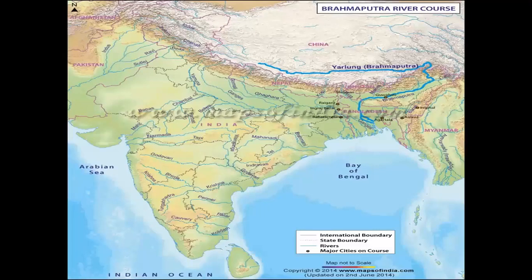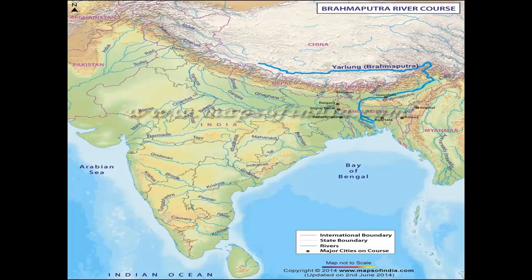The Brahmaputra originates from the northern side of the Himalayas and flows across southern Tibet, then enters India through the state of Arunachal Pradesh. It flows southwest through the Assam Valley and enters Bangladesh before emptying into the Bay of Bengal. In Bangladesh, the Brahmaputra river is known as Jamuna — not to be confused with our own Yamuna river.